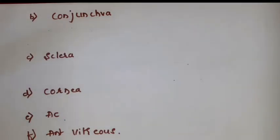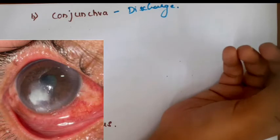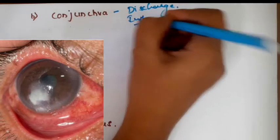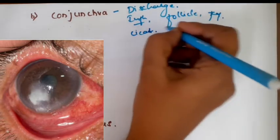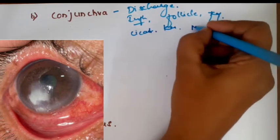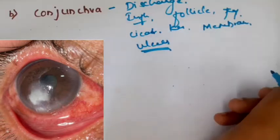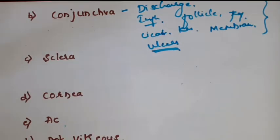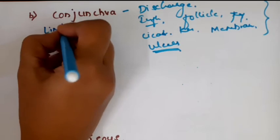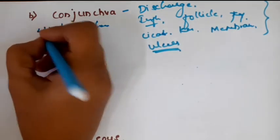In the conjunctiva, look for conjunctival discharge - the patient may be having conjunctivitis which might have progressed to keratitis. Look for signs of conjunctival inflammation like follicles and papillae. There can be cicatrization or keratinization of the conjunctiva, membranes, or ulcers on the conjunctiva. All these give a clue to the possible cause for the corneal ulcer. Also look for limbal ischemia, which could be secondary to chemical injuries and be the reason for the corneal ulcer.